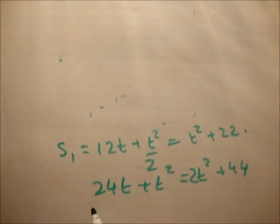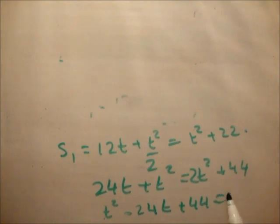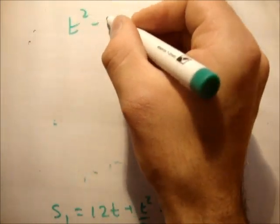Bring everything to one side. So 2T squared, well that's actually 1T squared. T squared minus 24T plus 44 is equal to 0. So let's note that up here.